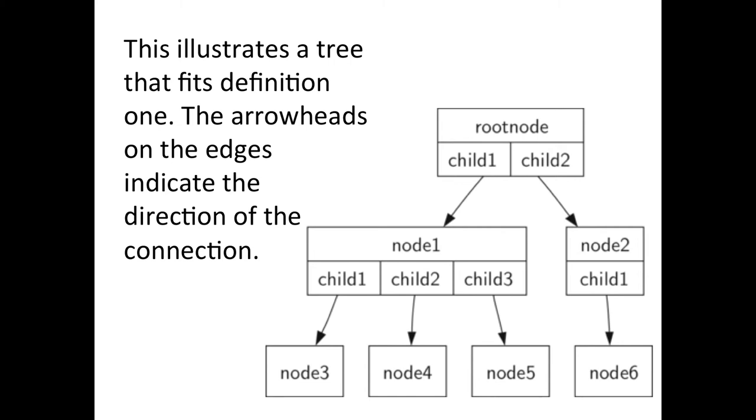So this illustrates a tree that fits that definition and this also gives you some clues of one way we might implement it. We might implement a tree as create a class called node where it would have the name of the node and then links to the children. So that's one way of doing it.